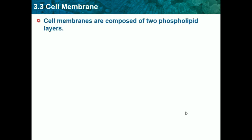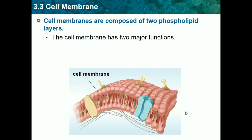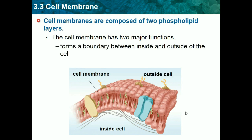The cell membrane is composed of two phospholipids. It has two major functions: it forms a boundary between the inside and the outside of the cell, and it controls the passage of materials. It's composed of a two-phospholipid layer. Each one of these circles with the little tail hanging down is a phospholipid. There are two of them, one on each side, so it's called a phospholipid bilayer — bi meaning two.